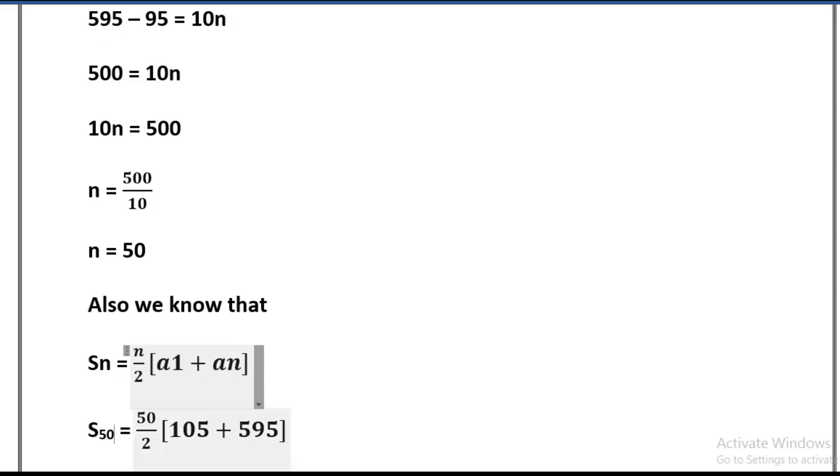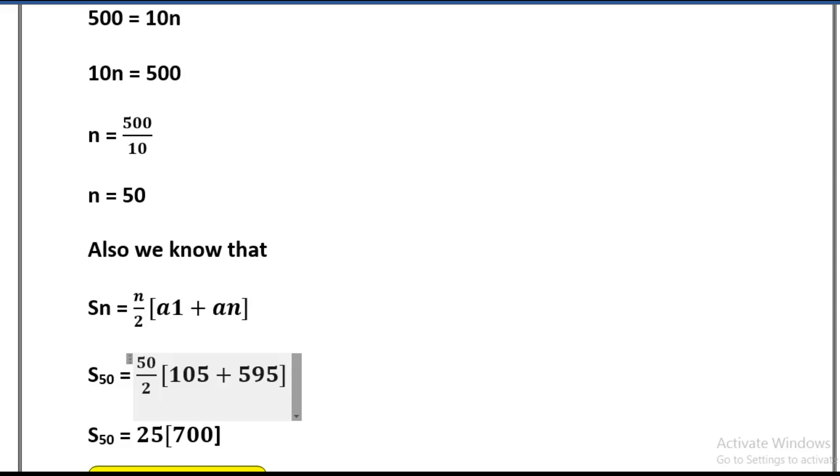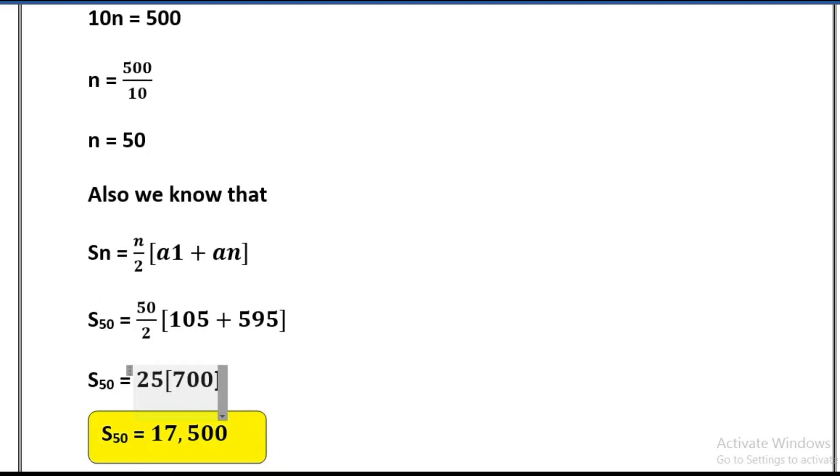n equals 50. S50 equals 50 divided by 2 times (105 plus 595). 595 plus 105 equals 700 times 25. So 25 times 700 which equals 17,500. So S50 equals 17,500, which is the required solution.